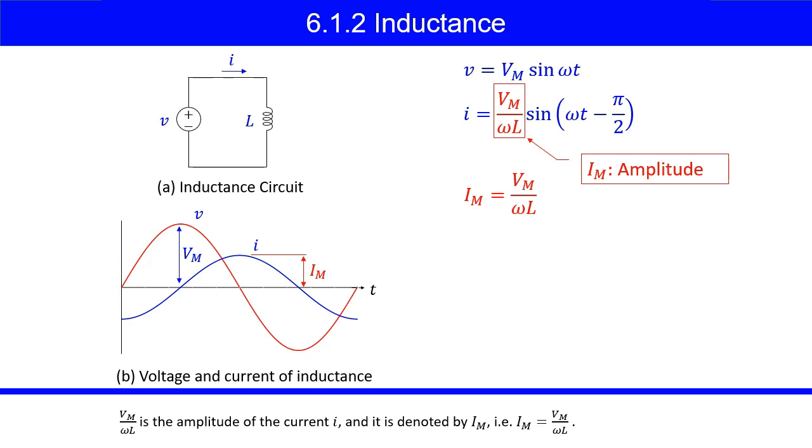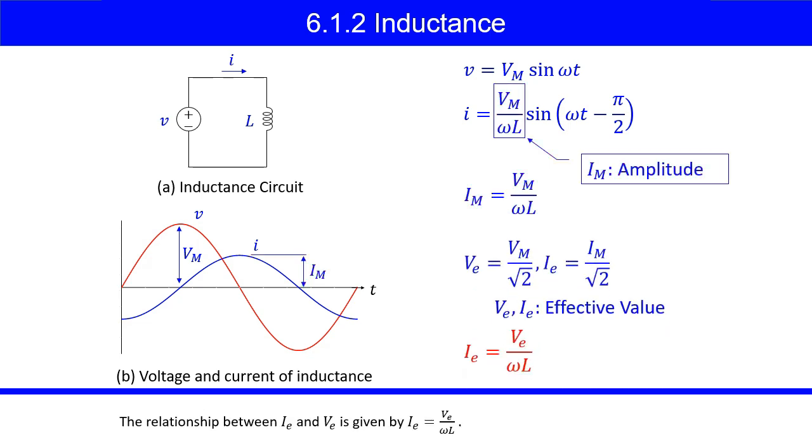Vm over omega L is the amplitude of the current I, and it is denoted by Im, that is Im equals Vm over omega L. The relationship between IE and VE is given by IE equals Vm over omega L.